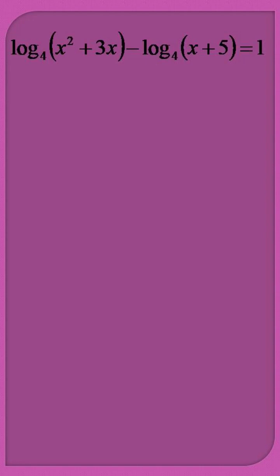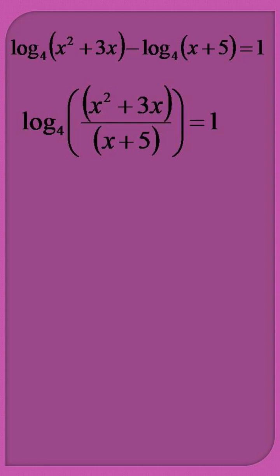So, we make use of the division property of the log and the equation transforms to log of x squared plus 3x divided by x plus 5 to the base 4 is equal to 1. Using the definition of log, x squared plus 3x by x plus 5 becomes equal to 4.